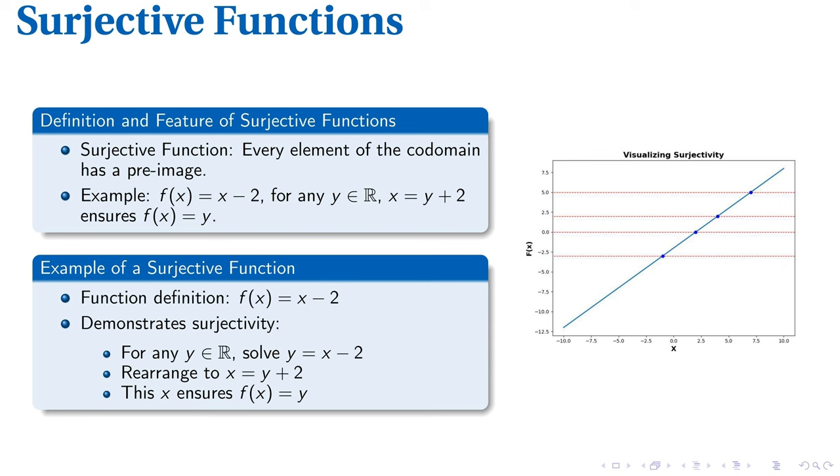Here, for any real number y, we can always find an input x equals y plus 2, so that f of x equals y. This guarantees all potential outputs are tied to an input.